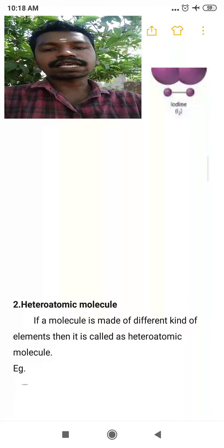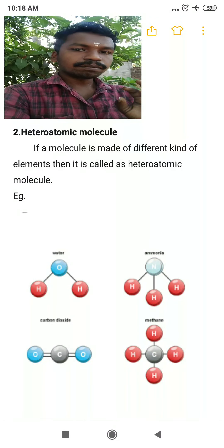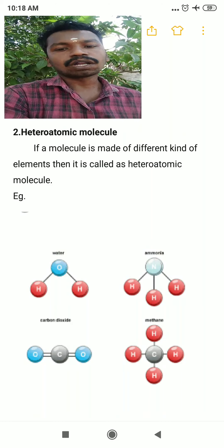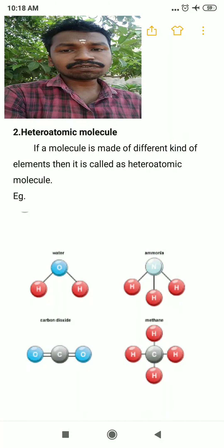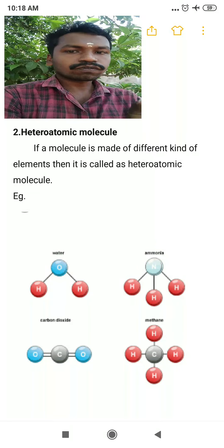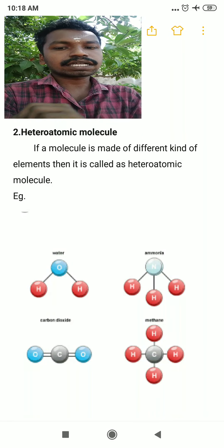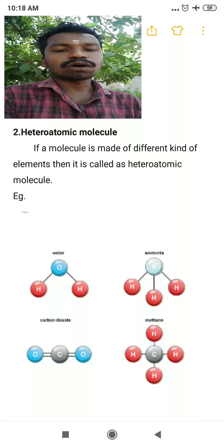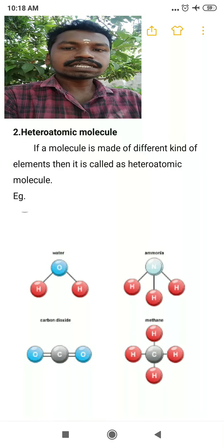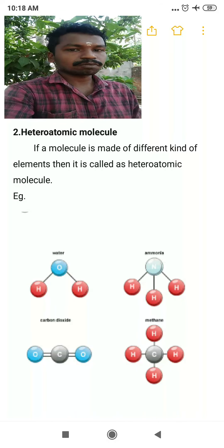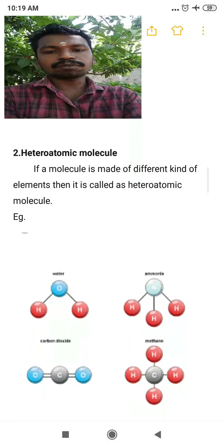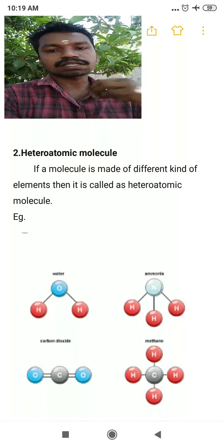Hetero means different — if a molecule is made of different kinds of atoms it is called a heteroatomic molecule. Examples: water (H₂O) is made of hydrogen and oxygen atoms; ammonia (NH₃) is made of nitrogen and hydrogen; carbon dioxide (CO₂) is made of carbon and oxygen; methane (CH₄) is made of carbon and hydrogen.